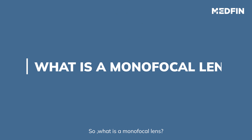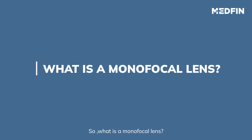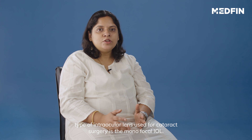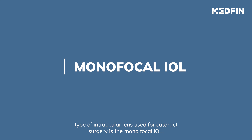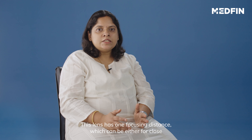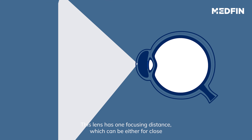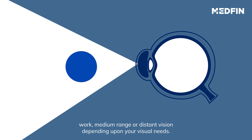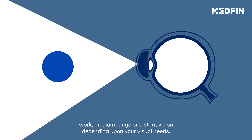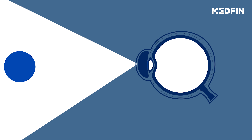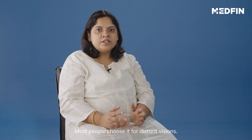So what is a monofocal lens? The most common type of intraocular lens used for cataract surgery is the monofocal IOL. This has one focusing distance, which can be either for close work, medium range, or distant vision depending upon your visual needs. Most people choose distant vision.